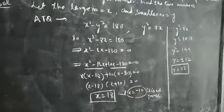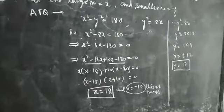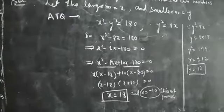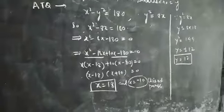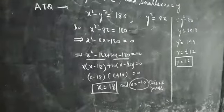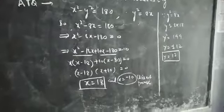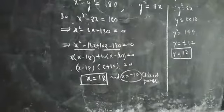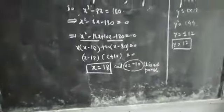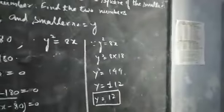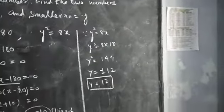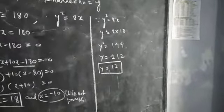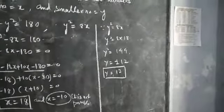This equation becomes x squared minus 8x minus 180 = 0. Factorize this quadratic equation. The factors become (x - 18)(x + 10) = 0. The value of x: x = 18 and x = -10. Since x = -10 is not possible, we take x = 18. Since y squared = 8x = 8 times 18, then y = plus or minus 12, so y = 12. The two numbers are 18 and 12.